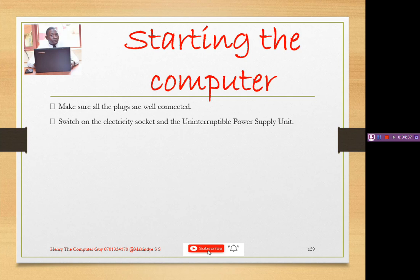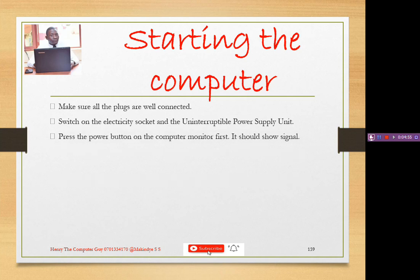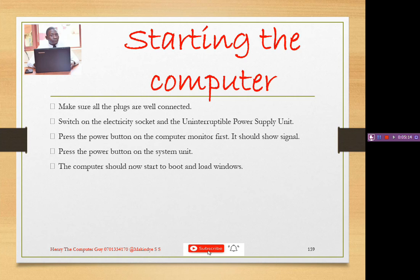Switch on the electricity socket and the uninterruptible power supply. Switch on your mains socket first, then switch on the UPS since it also has a battery. Press the power button on the computer monitor first — it will light up to show it has powered on. Then press the power button on the system unit, which will also show a signal that it is powered on.